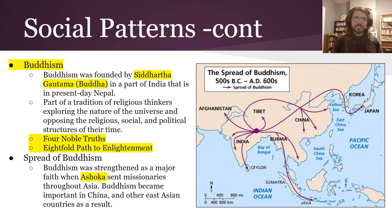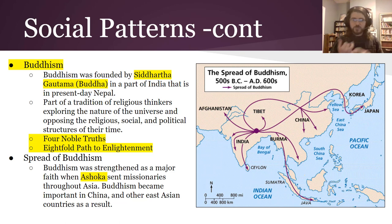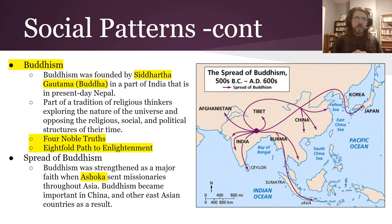So he becomes a seeker of religious knowledge, trying things like starving himself and living in utter poverty — all these different ways of trying to achieve enlightenment — until he arrives at the Four Noble Truths and the Eightfold Path to Enlightenment.